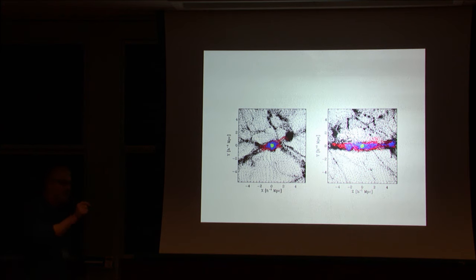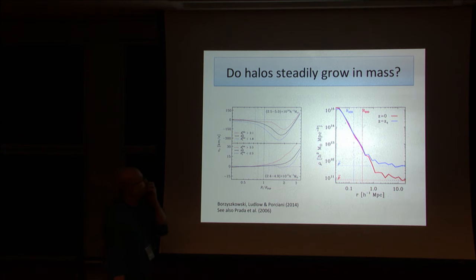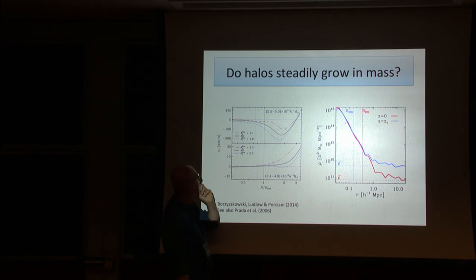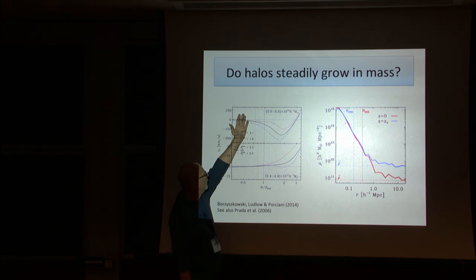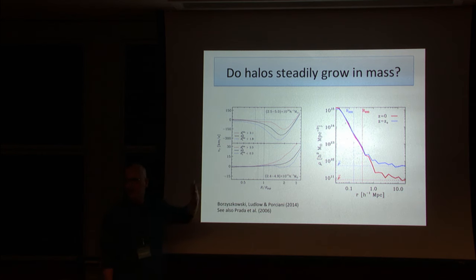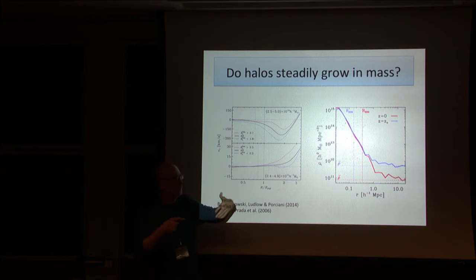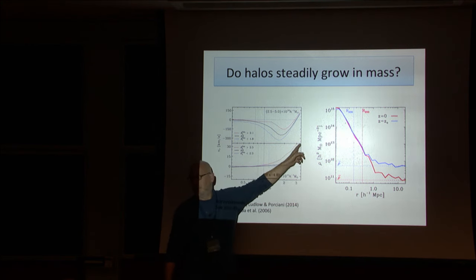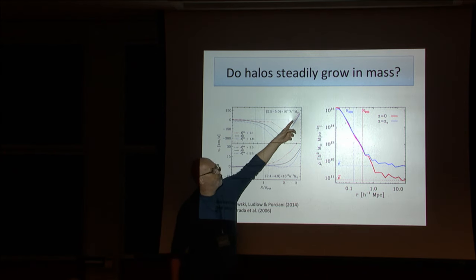The red one is what extended Press-Schechter would assign to the halo, but it's sheared away. Actually, to convince you that material is not really falling onto these halos anymore, this is the radial velocity profile of a low-mass halo. What you see—this was already shown in the past—you have the stable region where the halo would be, and then you go directly to Hubble flow. There is no infalling region in between. While if you go to a high-mass halo, there is clearly an infalling region in between.